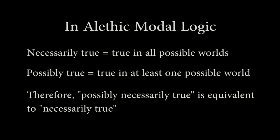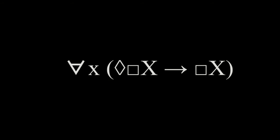In alethic modal logic, something necessary is true in all possible worlds, and something possible is true in at least one possible world. To say a statement — we'll call it X — is possibly necessary, is to say that in at least one possible world, it is true that X is true in all possible worlds. This is the same as saying that X is true in all possible worlds. And this means that saying 'possibly necessarily X' is equivalent to saying 'necessarily X.'